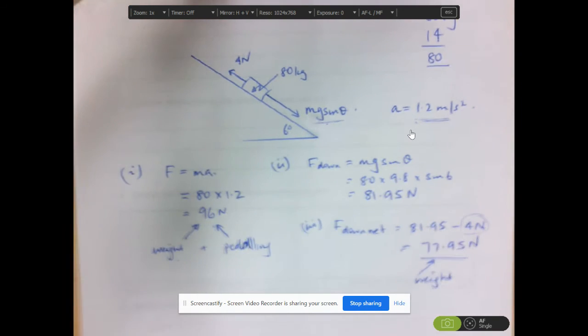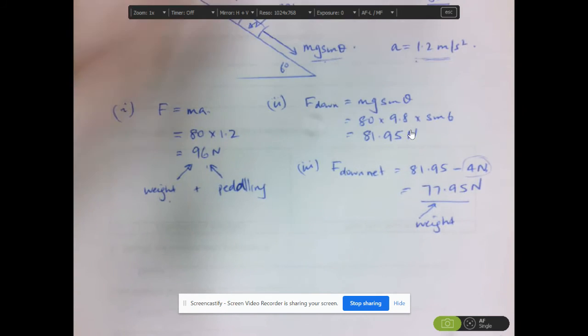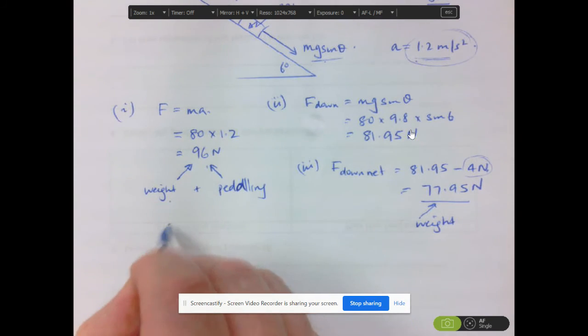So what's the amount of force that he needs to do to go down the plane at this? So what's the pedaling force? Therefore, he would need to, he's got to get 96 newtons, and 77.95 is coming from the forces from the plane.